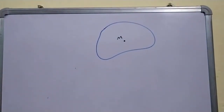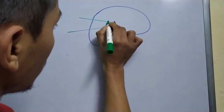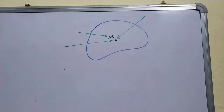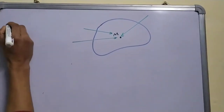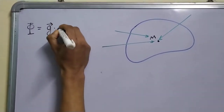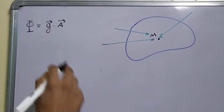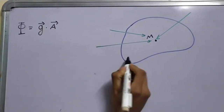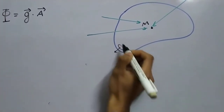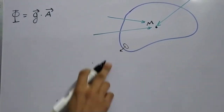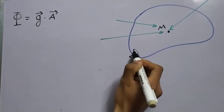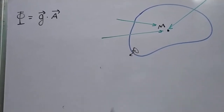This is what the gravitational field due to a point mass looks like. The formula for flux φ is the gravitational field dotted with the area vector. This area vector has a magnitude proportional to the area and its direction is perpendicular — normal — to the surface.